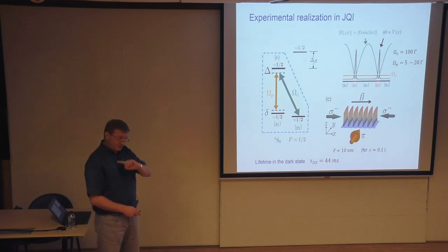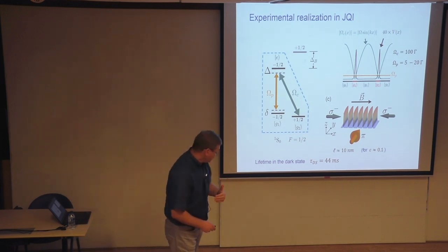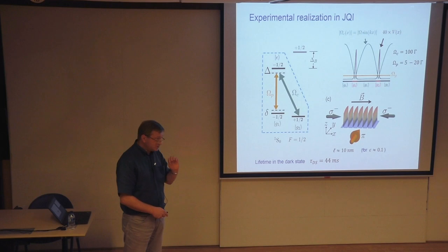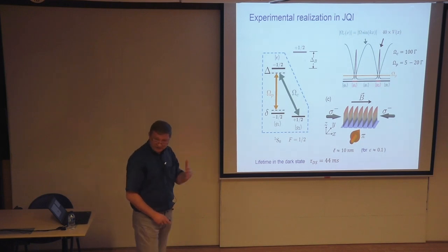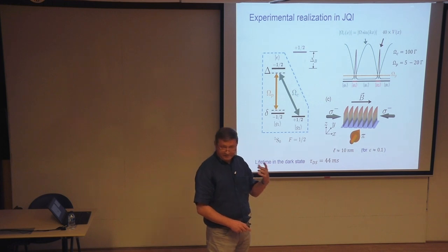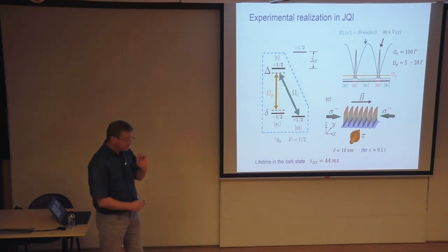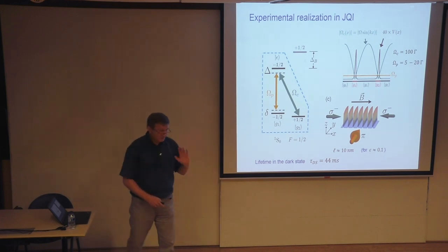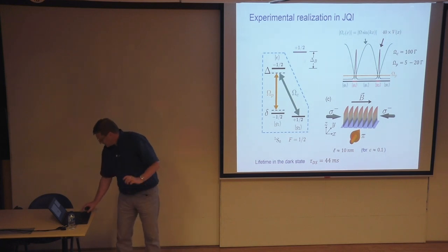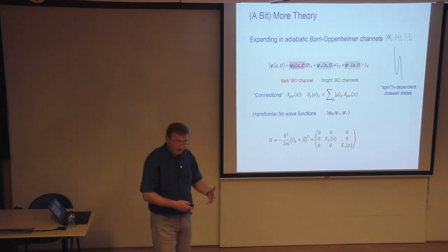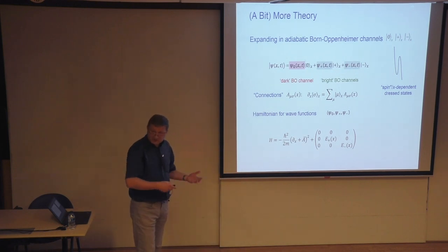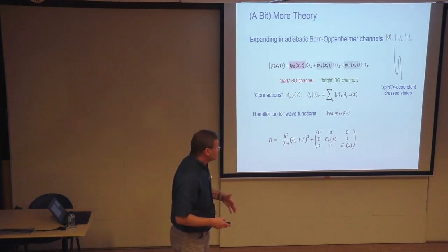What you expect from the experiment: these barriers — with the sigma-minus standing wave as the control field and the pi field as probe — should look like very thin, high barriers magnified 40× compared to the control field scale. They estimated the barrier size at 10 nanometers for epsilon = 0.1. They also observed, to demonstrate it's truly a dark state, a lifetime of 44 milliseconds — approximately 100,000 times larger than the lifetime of an atom in free space. It's really a dark state.